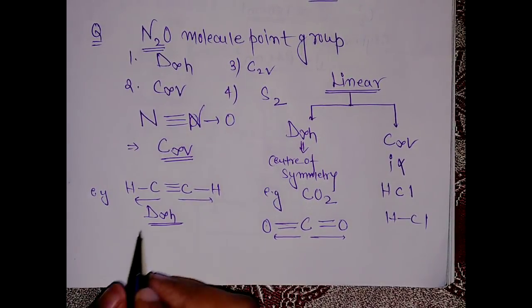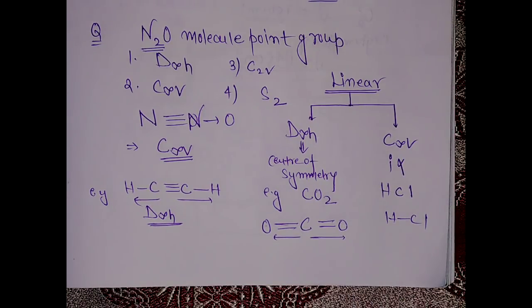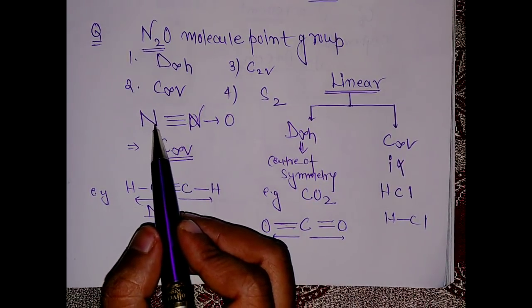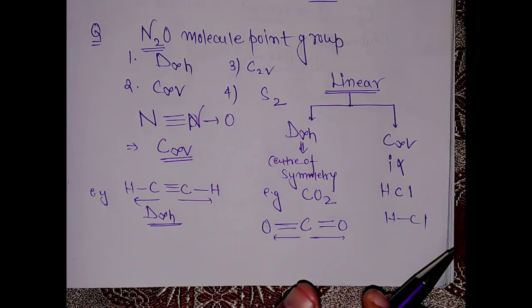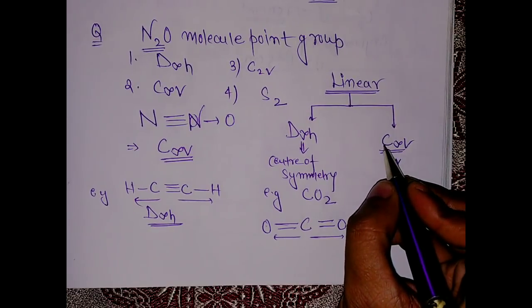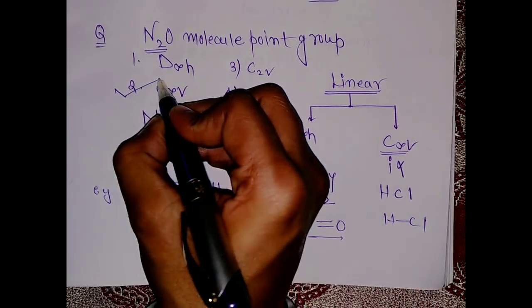First of all it is linear and it is having a center of symmetry, that means the point group is D∞h. But in molecules like this N2O or this HCl, these are linear but there is no center of symmetry, that means there is a point group of C∞v. So the answer would be C∞v.